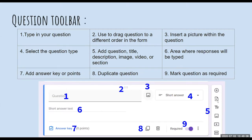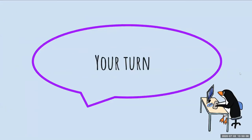Number six is where responses will be typed or logged — whether checkbox, multiple choice, or another question type. Number seven is to add an answer key or points — optional, depending on your purpose. Number eight duplicates the question, including the question type, any media, and settings like answer key and points. Number nine designates the question as required or not required. Now it is going to be your turn, but let me walk you through a couple of examples first.